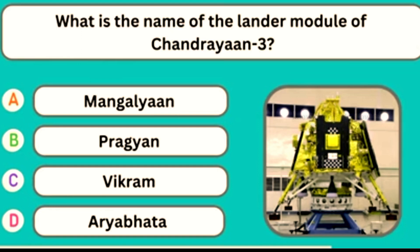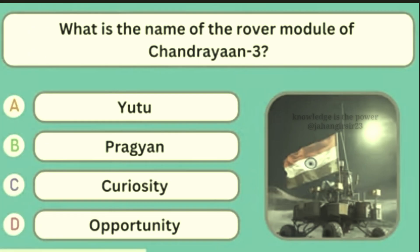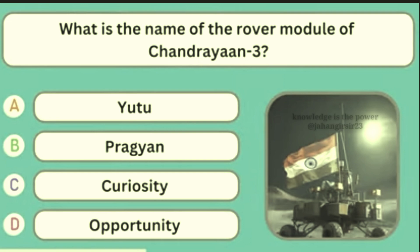What is the name of the lander module of Chandrayaan-3? Option C — Vikram. What is the name of the rover module of Chandrayaan-3? Option B — Pragyan.